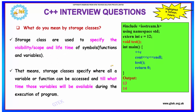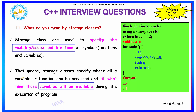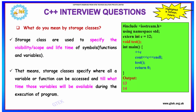What do you mean by storage class? Storage classes are used to specify the visibility, scope, and lifetime of symbols such as functions and variables. They specify where variables can be accessed and for how long they remain available during execution. For example, declaring int c = 12 with the storage class external means it can be accessed globally throughout the execution of the program.